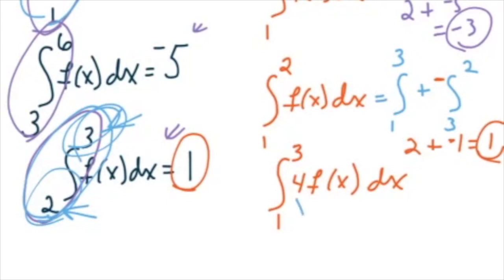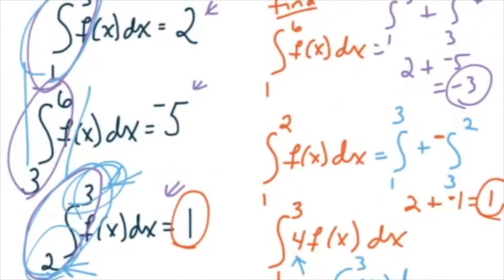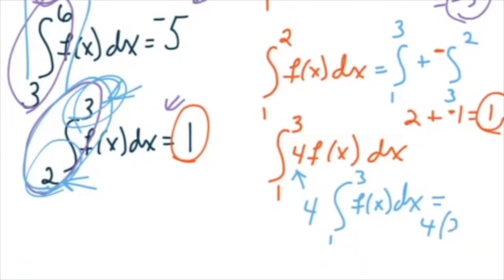And then, if you have some kind of constant sitting out in front of it, the 4 can slip on outside that integral. That's the beauty property, right? Just slips on out. That k just pops on out of there. And I end up getting 4, and then I go from 1 to 3, which, oh, by the way, remember that was 2. And so I get an 8. So my answer is 8.